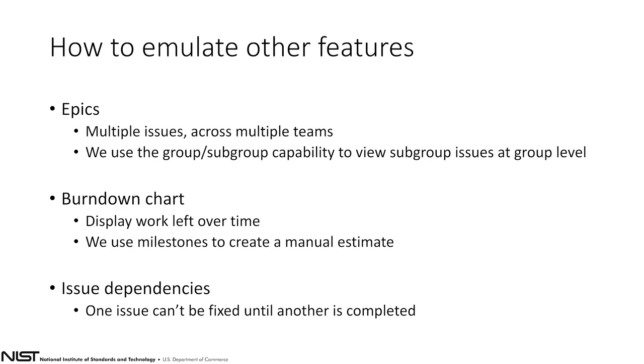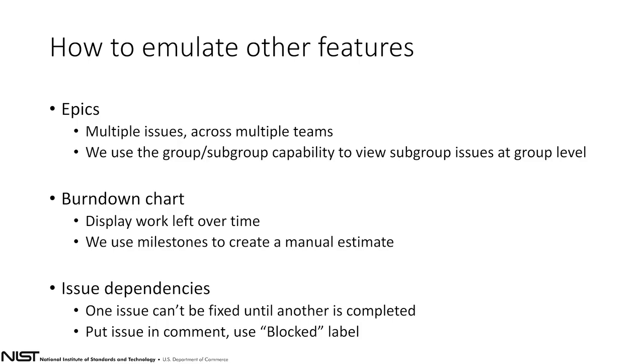For burndown charts, what we recommend is we use milestones to basically create a manual estimate. We create an issue that is basically the burndown chart, and then as people are going through, we can set a deadline date for that particular issue. We can mention both that issue and the issue the user is actually working on in those different commit messages. For example, if we're releasing version 3 of a particular software, just include the version 3 issue within your commit messages. For issue dependencies, we put the particular issue in the comments section of another issue, and you can also add these group-level labels called 'blocked'. We basically track the blocked issues as the dependencies.